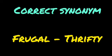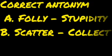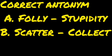Find the correct pairs of synonyms — the correct pairs of synonyms are 'frugal and thrifty'. Next: correct antonyms — the correct answer is 'scatter and collect'. Scatter and collect is the correct pair. Also note 'folly and stupid'.